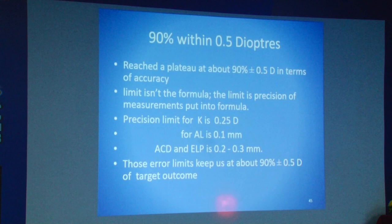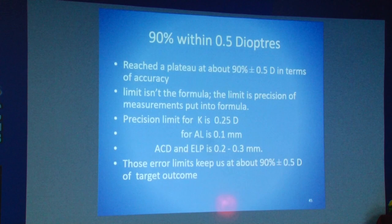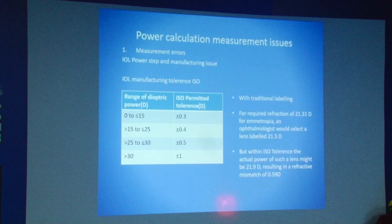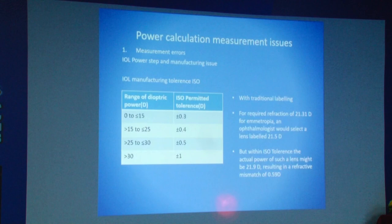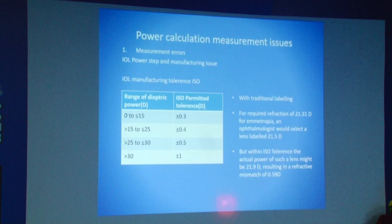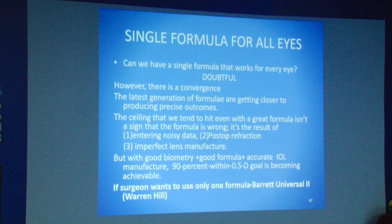Why are we still stuck at 90% accuracy within 0.5 diopters? The limit is now not the formula — we have very good formulas. The limit is the precision limit for keratometry, where the least count is 0.25 diopters; for axial length it is 0.1 mm; and for anterior chamber depth it is 0.2 mm. These least-count error limits keep us at 90% accuracy. Additionally, there is ISO permitted tolerance for various powers — if I calculate 21.3 diopters, the nearest available power is 21.5, and with an ISO tolerance of 0.4, the effective power could be 21.9 diopters — a 0.6 diopter error even with perfect calculation, good instruments, and good surgery. This error is beyond our control.